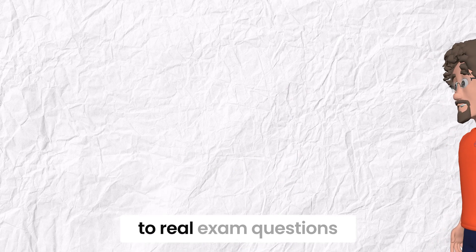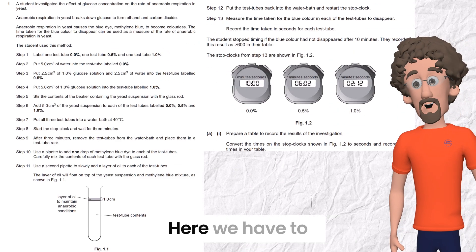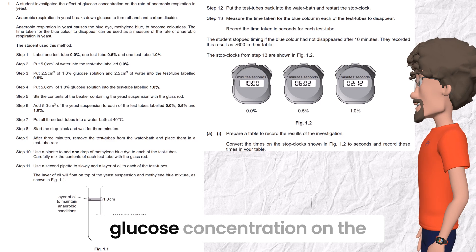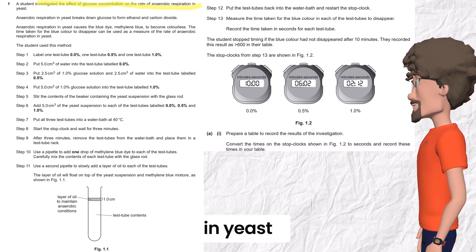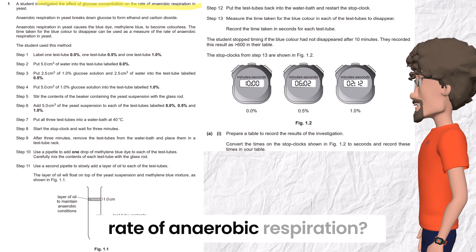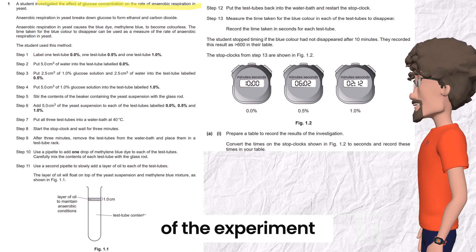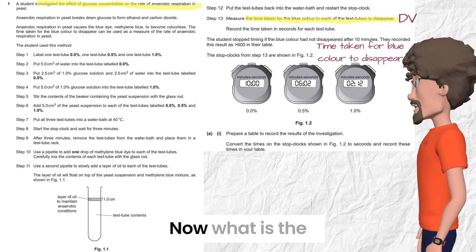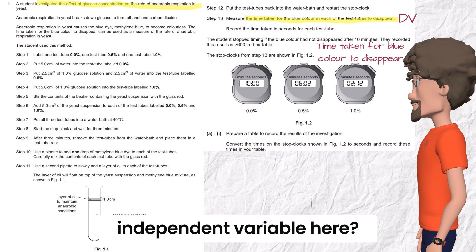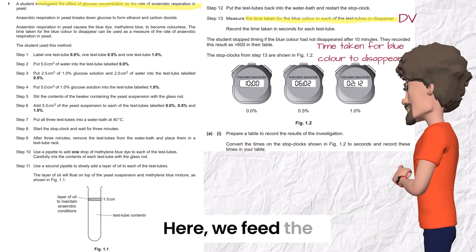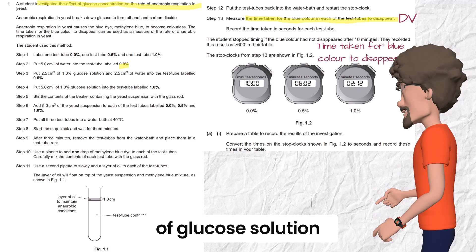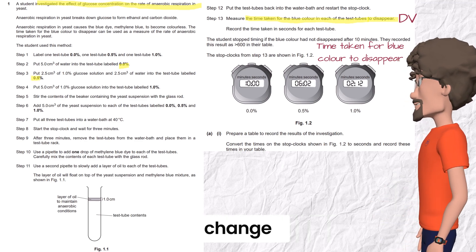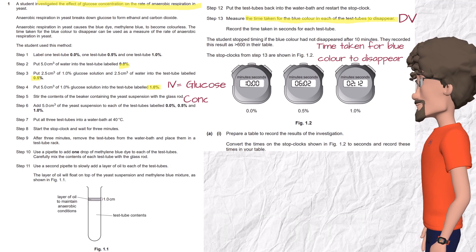Now let's apply this to real exam questions. Example one: investigate the effect of glucose concentration on the rate of anaerobic respiration in yeast. What should I measure? Go to the end of the experiment. The output here is time. So the dependent variable is time taken for the blue color to disappear. Now what is the independent variable? It's the variable I change. Here we feed the experiment with different concentrations of glucose solution. So the independent variable equals glucose concentration.